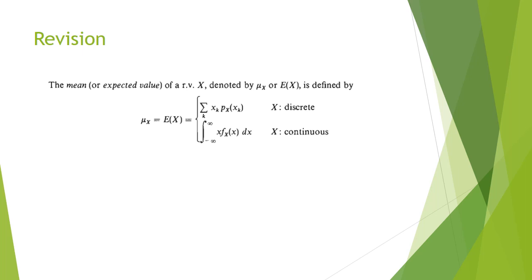For revision, the mean of a random variable is given by E[X] = summation of x_k * p(x_k). This can be denoted as f_X(x_k) or P(x_k). When X is discrete it is a summation; when X is continuous it is the integral from minus infinity to infinity of x * f_X(x) dx.